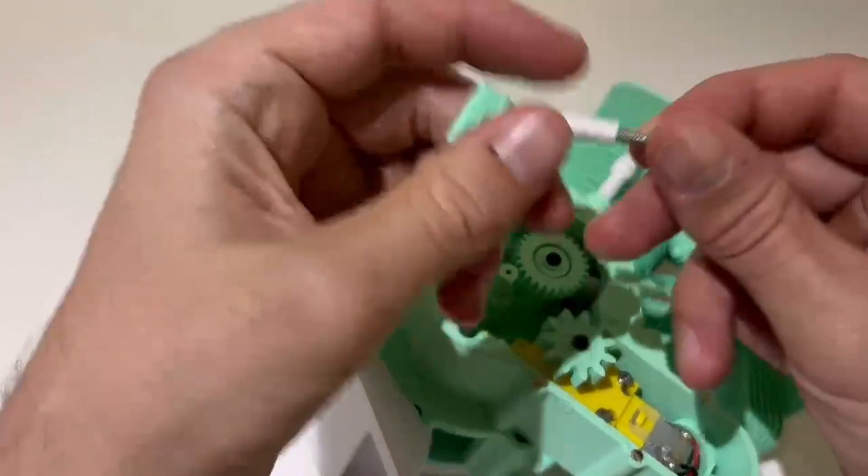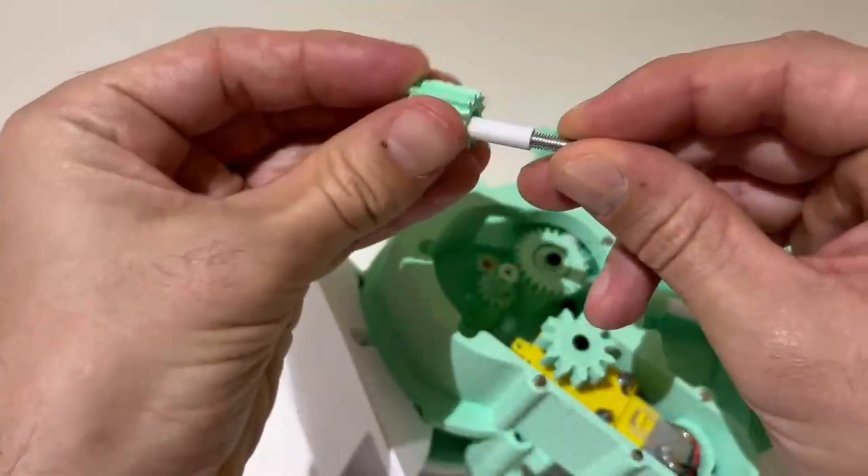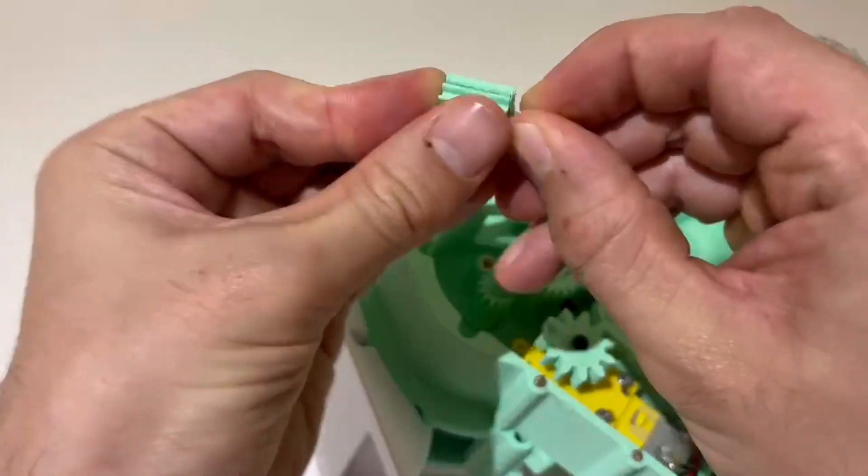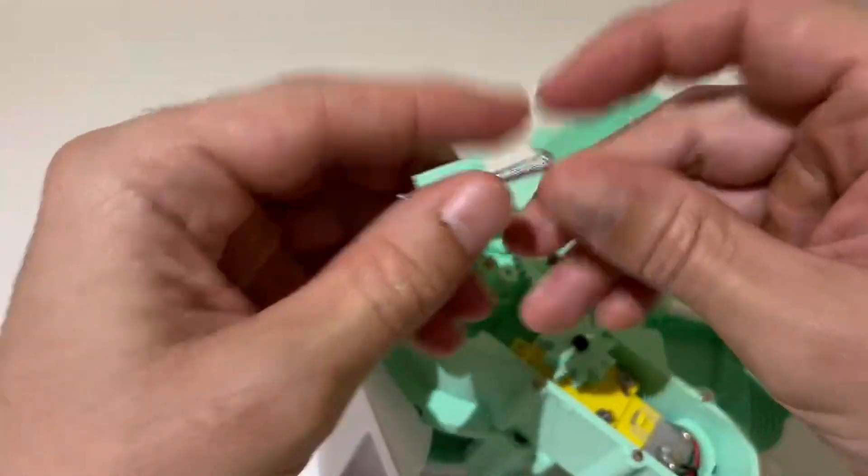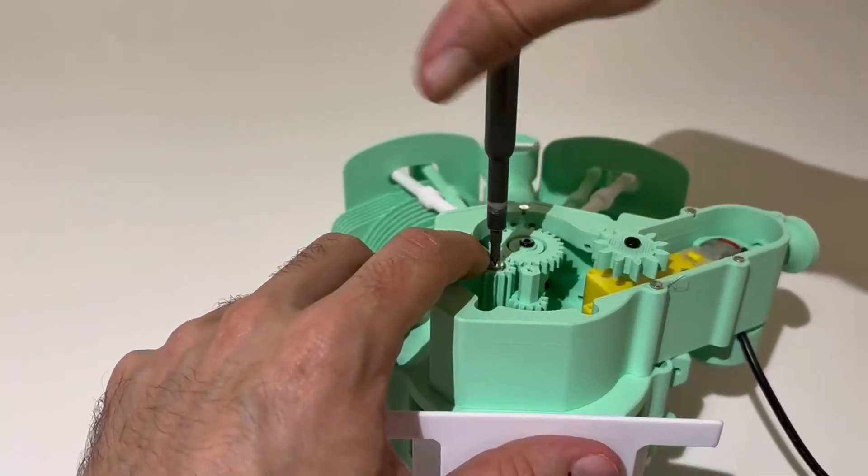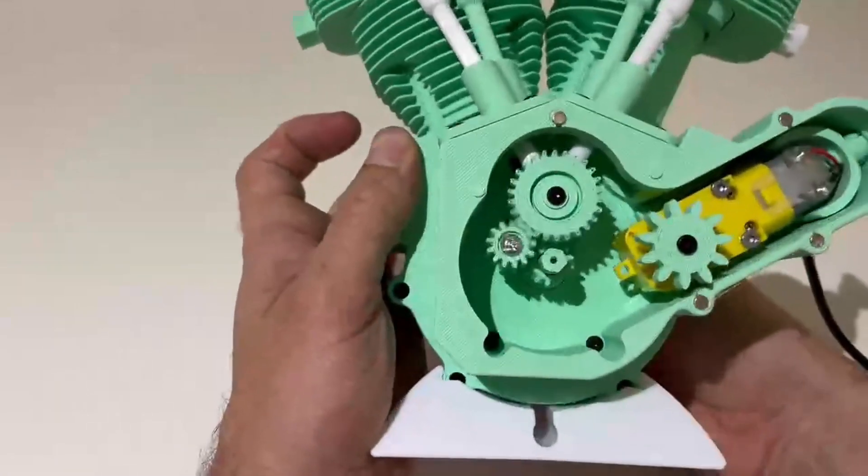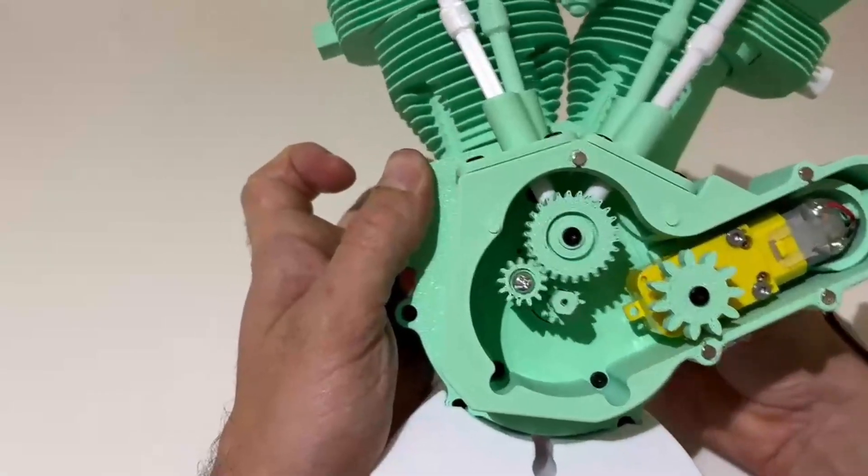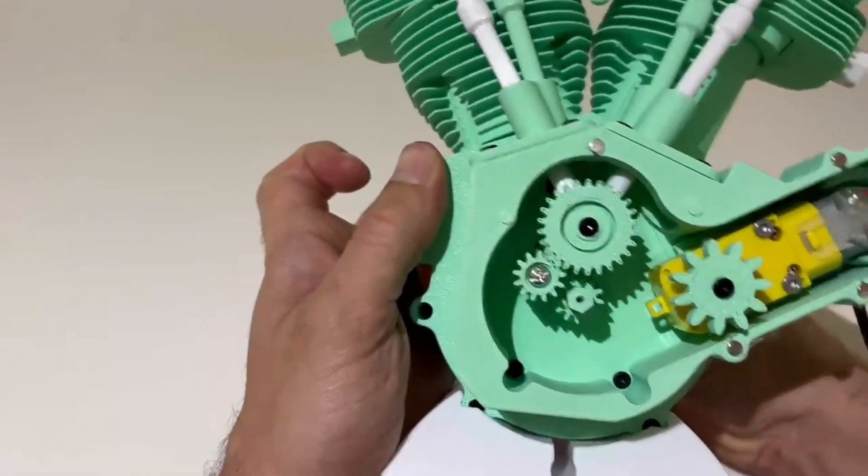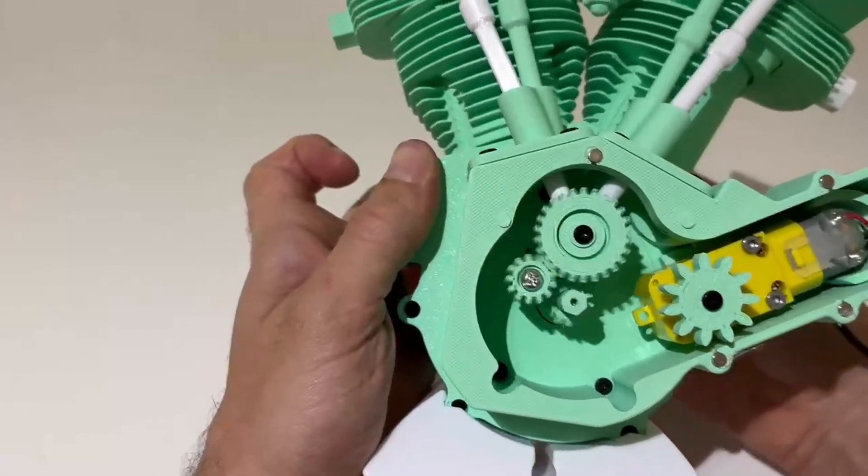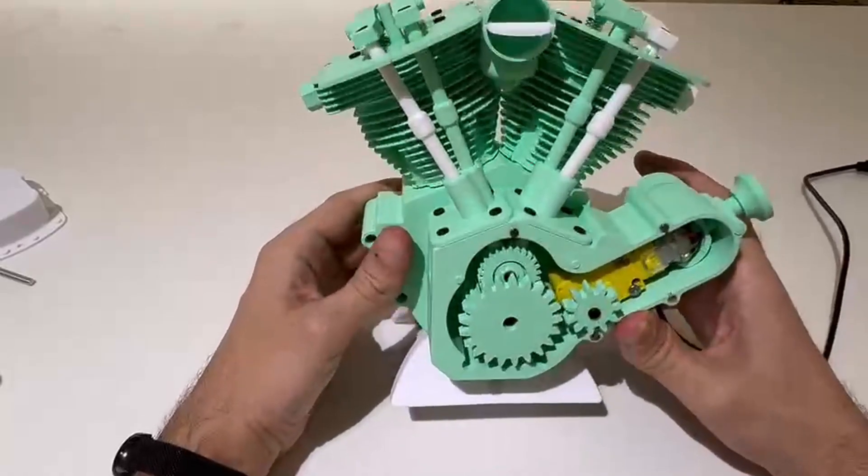There we go, so I've got my brass insert there. I printed off a sleeve that will go inside this bearing so let's get it all assembled and see if it works. Looks like it works.